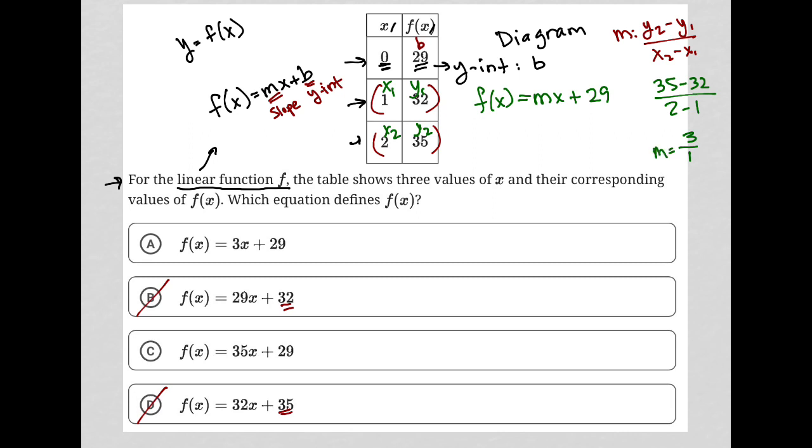Now I have my full equation. f(x) is equal to 3x, right? I just found that m equals 3, plus 29 that the question gave me by telling me that when x is 0, f(x) is 29. So there is my equation, and therefore the correct answer here is choice A.